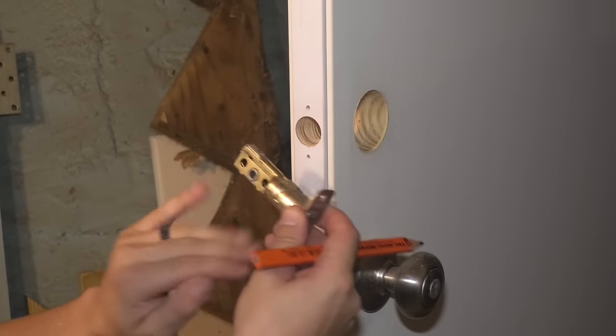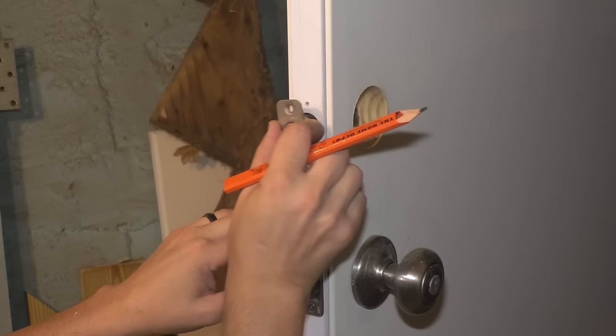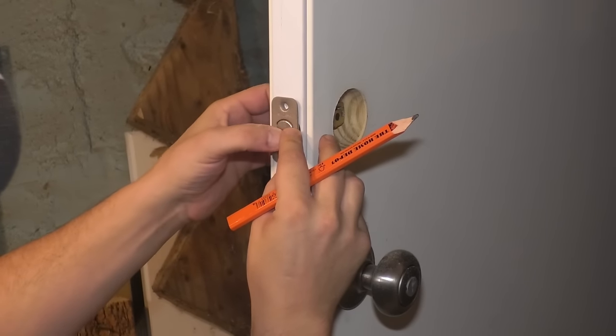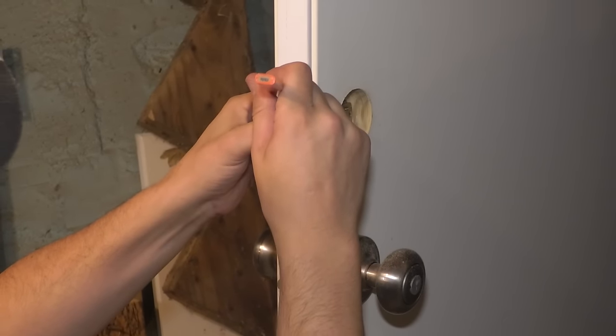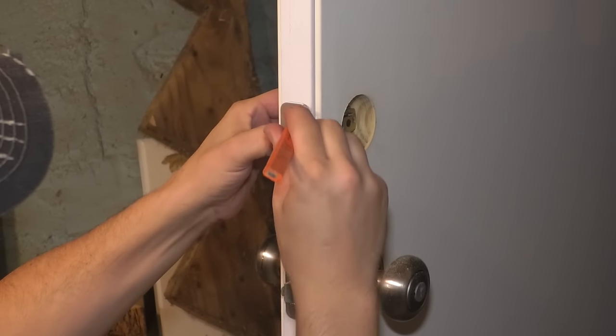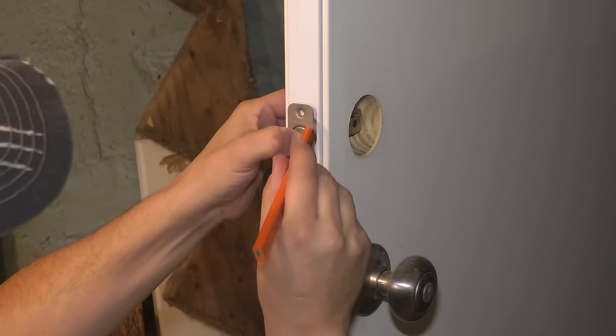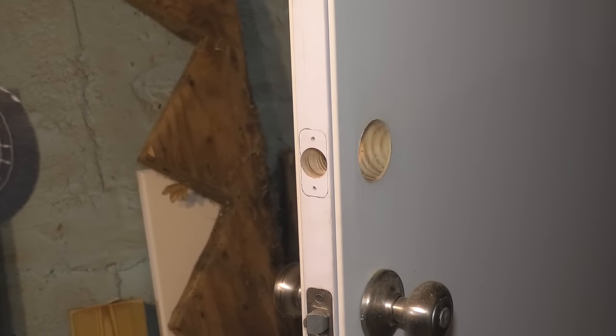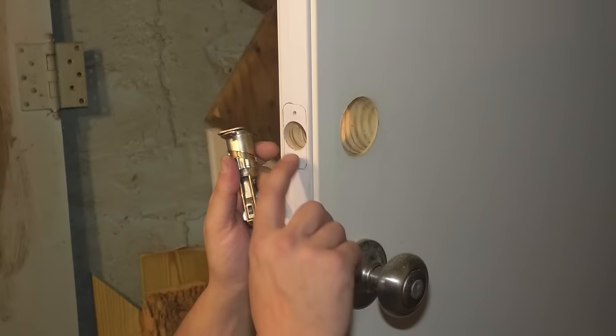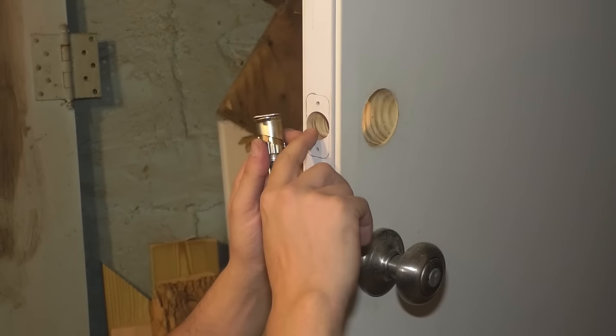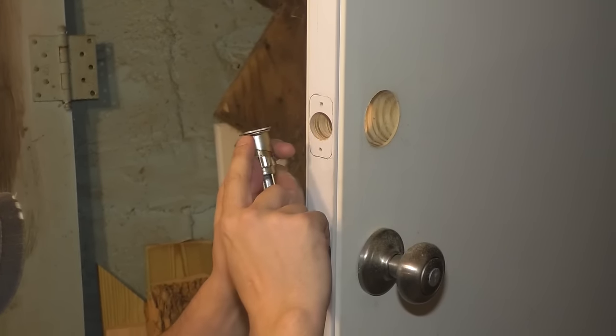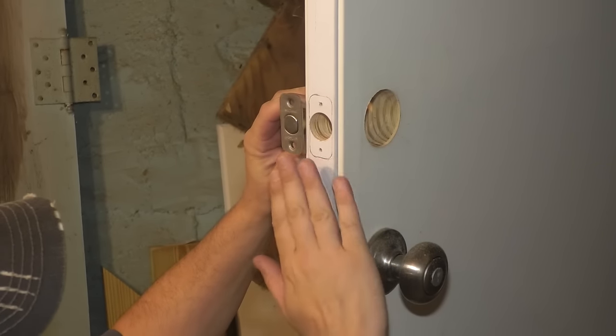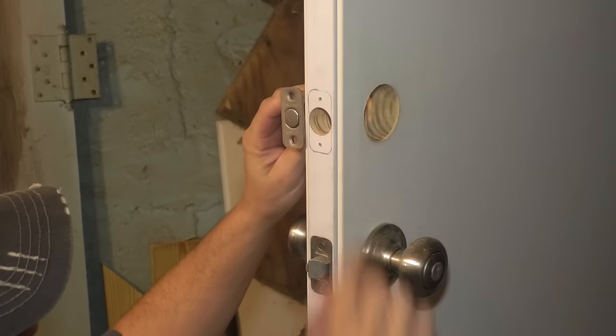Now you can line up the latch for the deadbolt. Just match it up to those screws. And then we're going to trace around here. It looks something like that. So now I need to mortise this out, which means basically just take off enough material so that this sinks in and it's flush with the door right here.